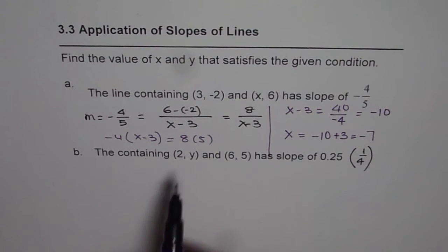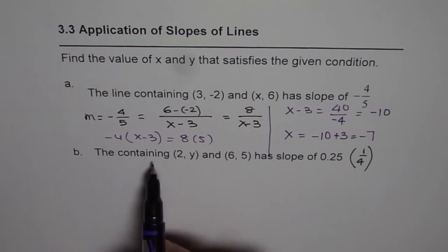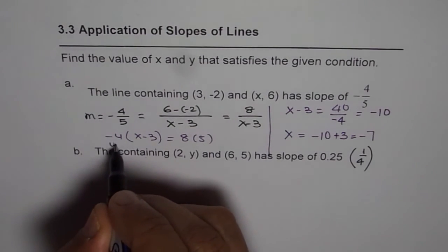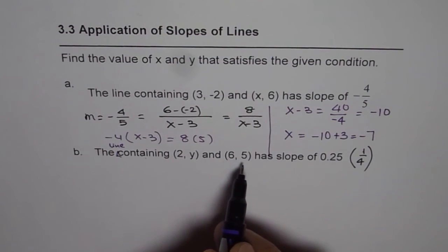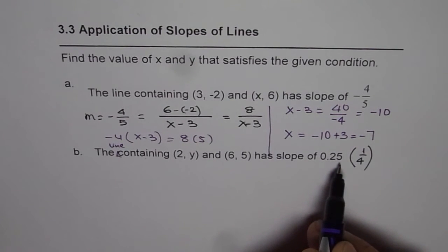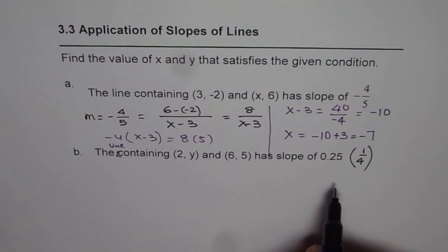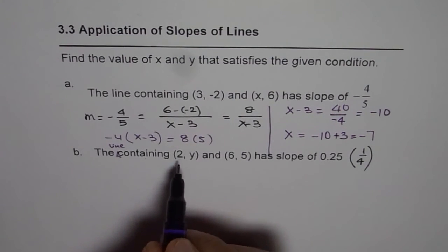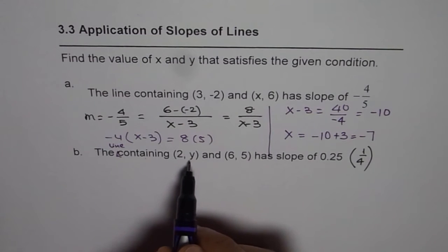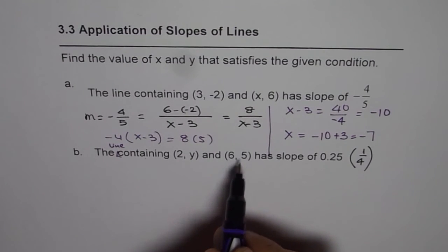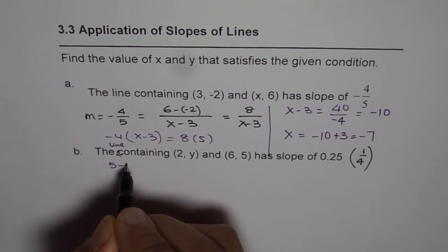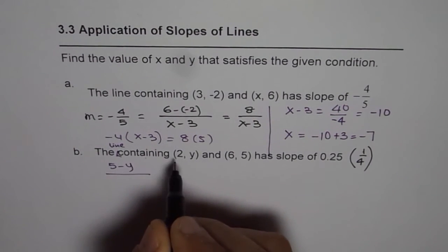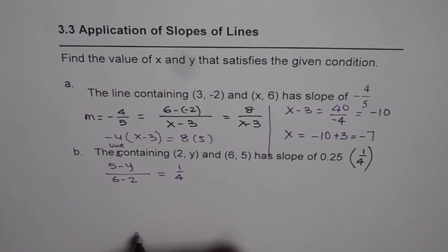Similarly, let us do part 2, which is the line containing (2, y) and (6, 5) has a slope of 0.25 which you can write as 1/4. So slope of the line segment joining these two points will be (5 - y) divided by (6 - 2), and that should equal 1/4.